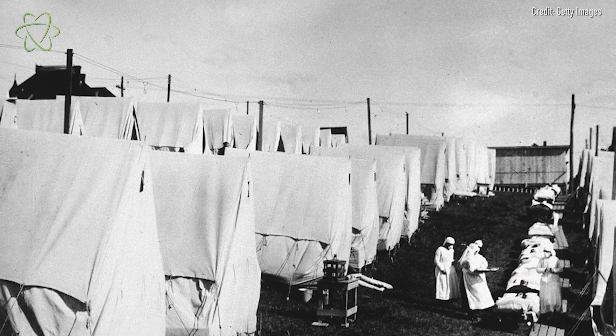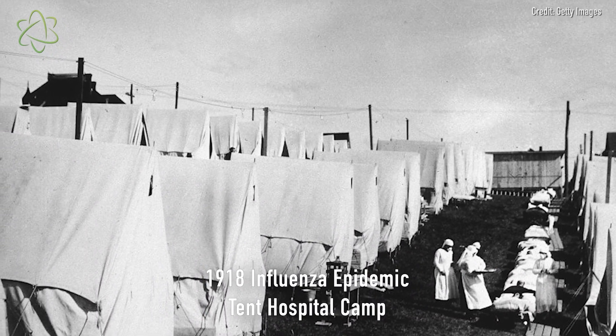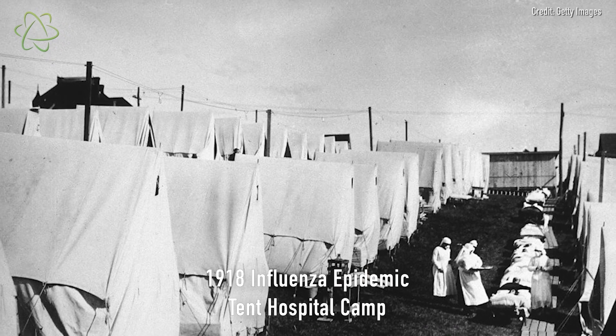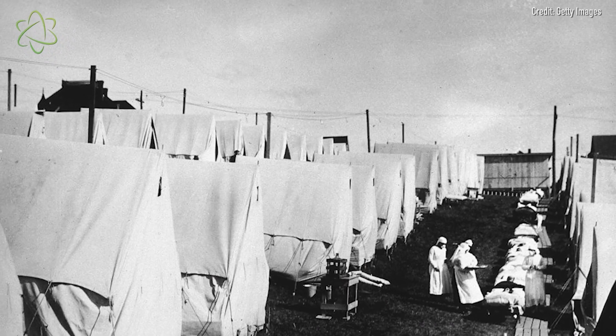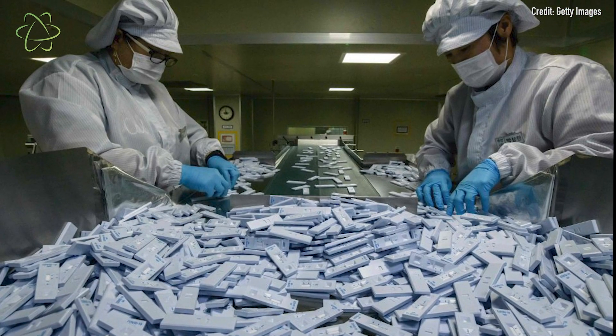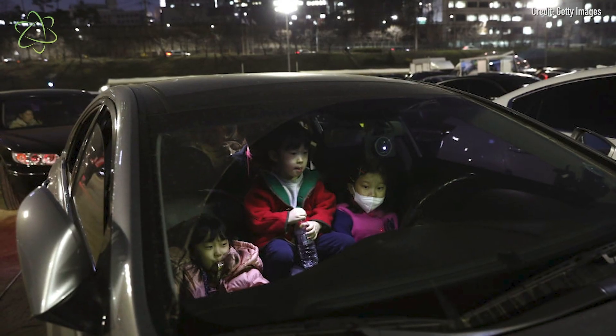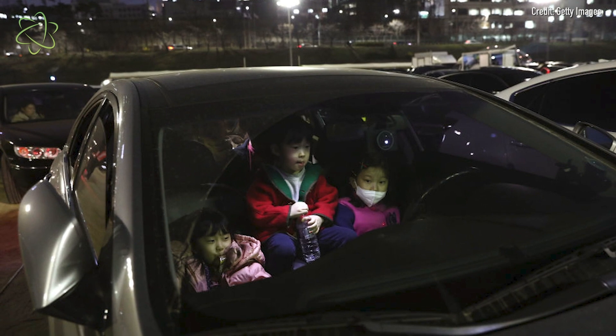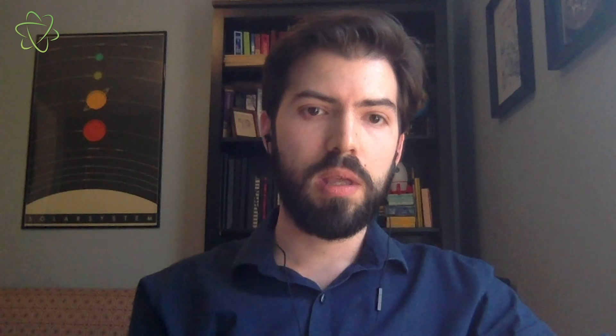We know from past pandemics, like the 1918 influenza outbreak, that flattening the curve works, and we can see this playing out during the current pandemic as well. Countries like South Korea and Taiwan have been able to significantly slow the spread of infections by aggressively testing the population and mandating social distancing practices like quarantines and school closures early on. Meanwhile, countries like the United States and Italy were slow to intervene and are currently seeing exponential growth in infection rates.